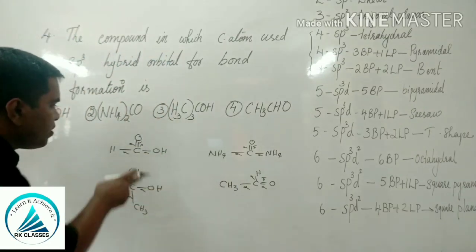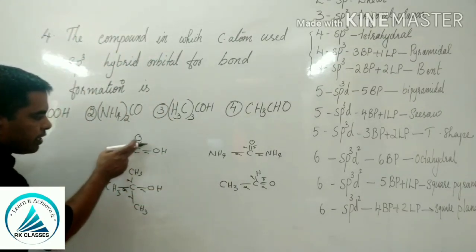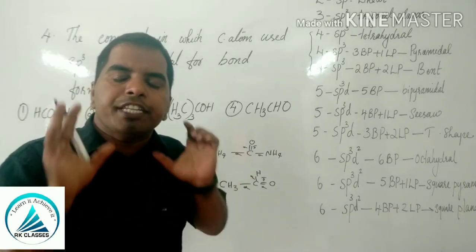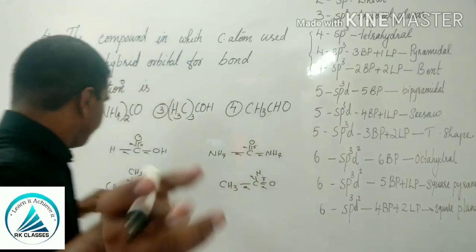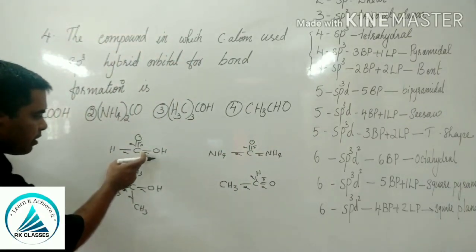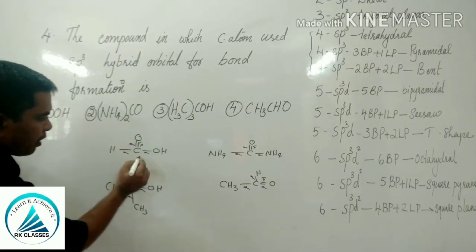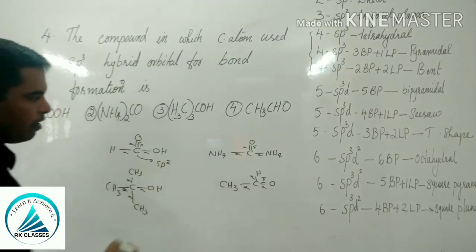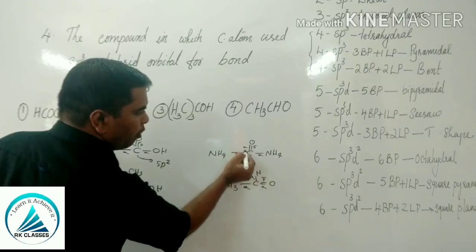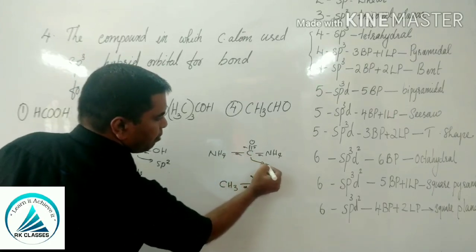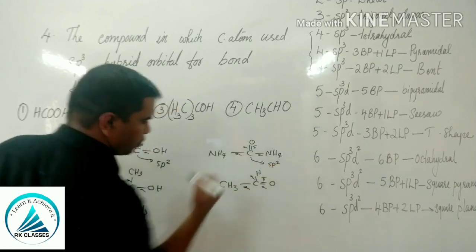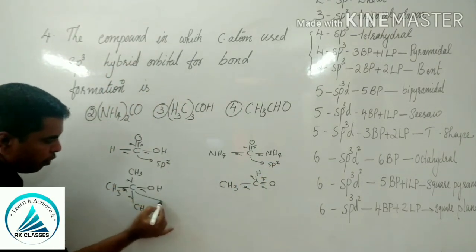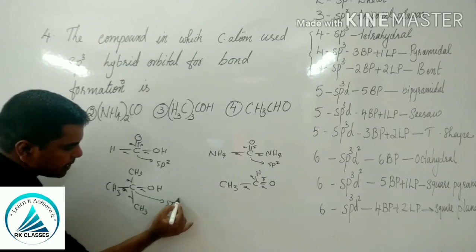Around the carbon in the aldehyde, there are 3 sigma bonds and 1 pi bond — pi bonds are not counted — giving 3 bond pairs, so that carbon is sp2 hybridized. For the methanol-type structure (CH3-OH), there are 4 bond pairs, so hybridization is sp3.